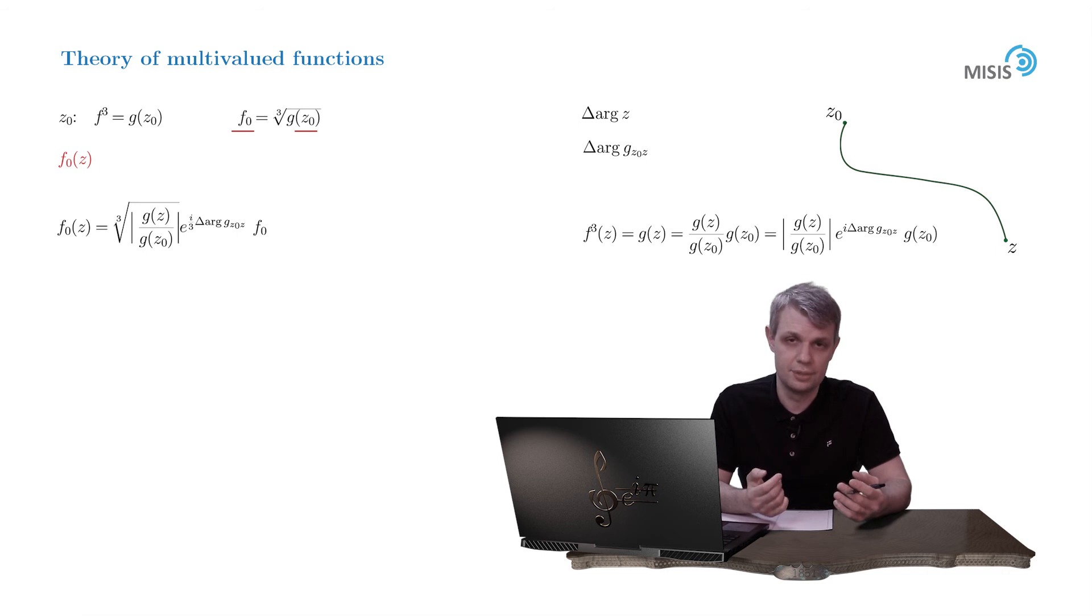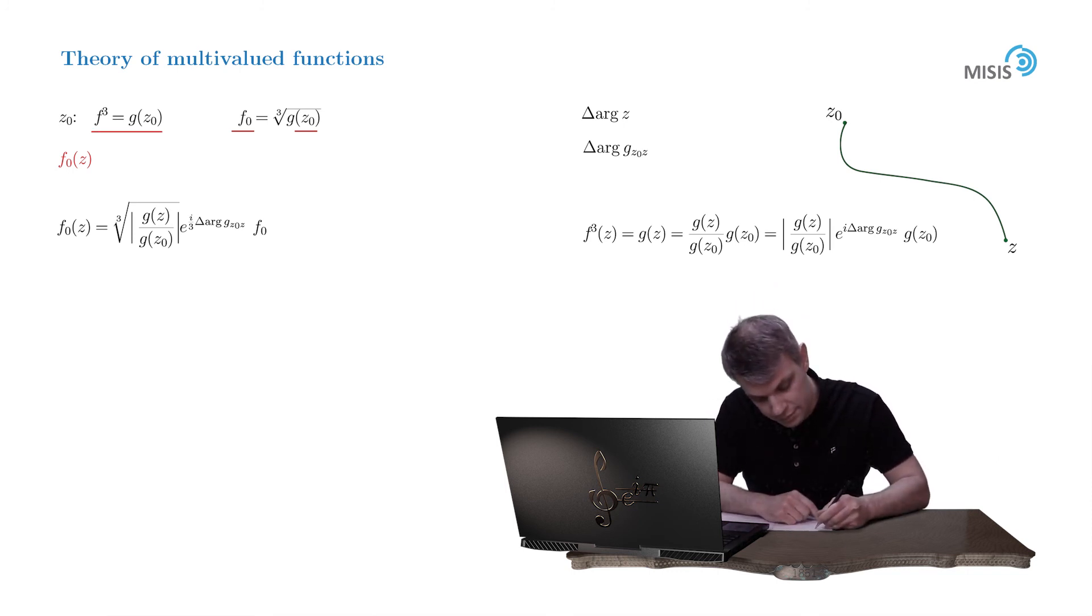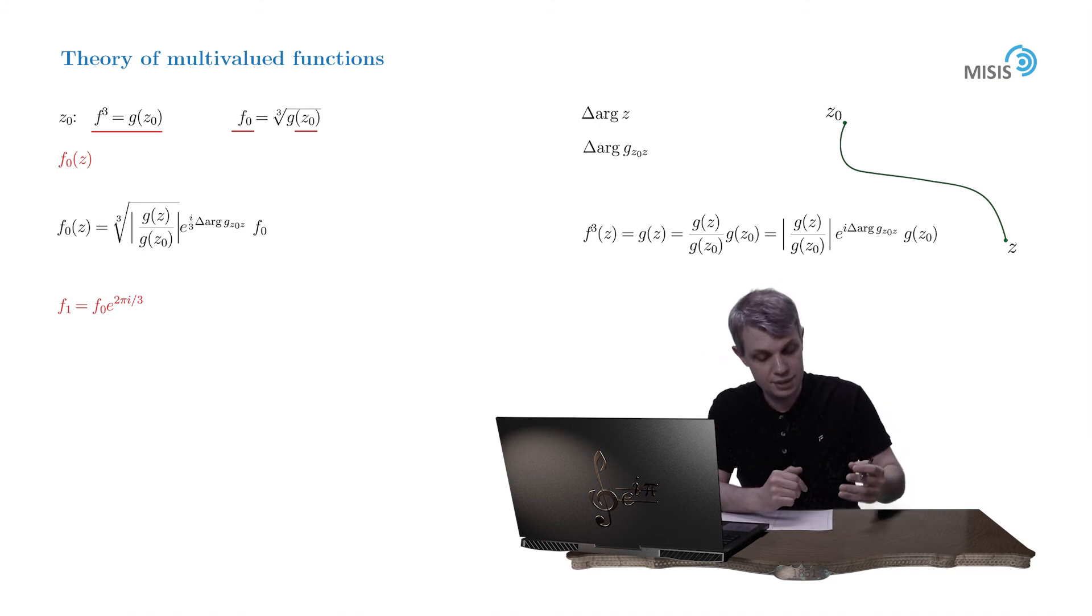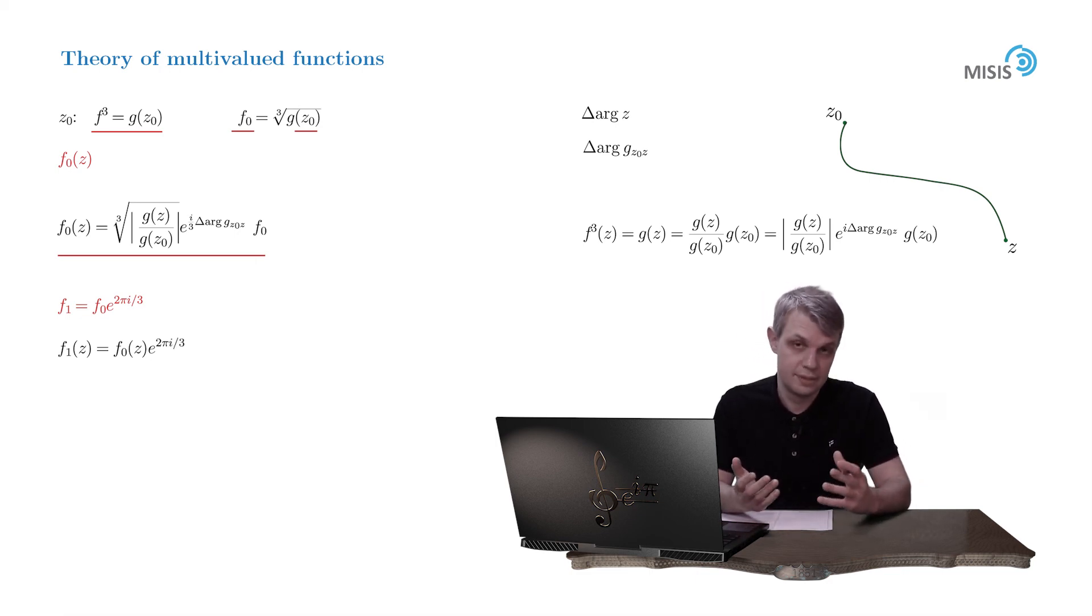What if we want to build another regular branch? Well, it's done in this very similar manner. The only difference is that at point z naught we just choose another solution of this cubic equation, so f cubed is equal to g of z naught. And then step by step we repeat the same procedure. So what we will get is a very similar construction, and the only difference will be an additional factor e to the power 2 pi i by 3. So now our new regular branch f1 of z will be equal to the previous regular branch times e to 2 pi i by 3.